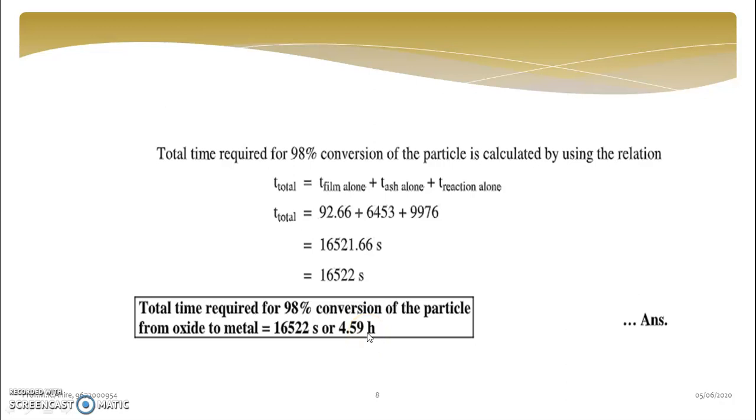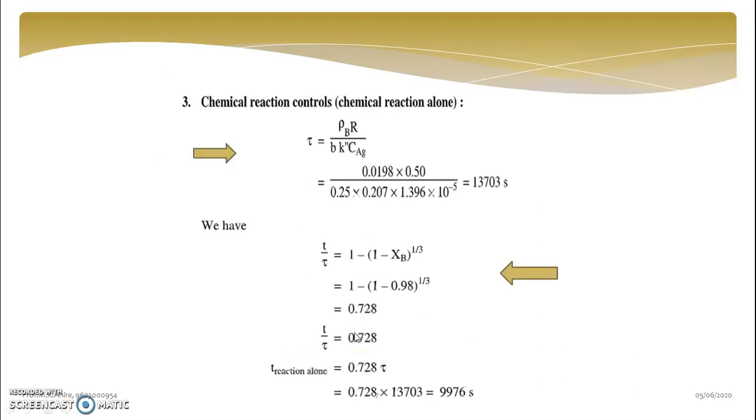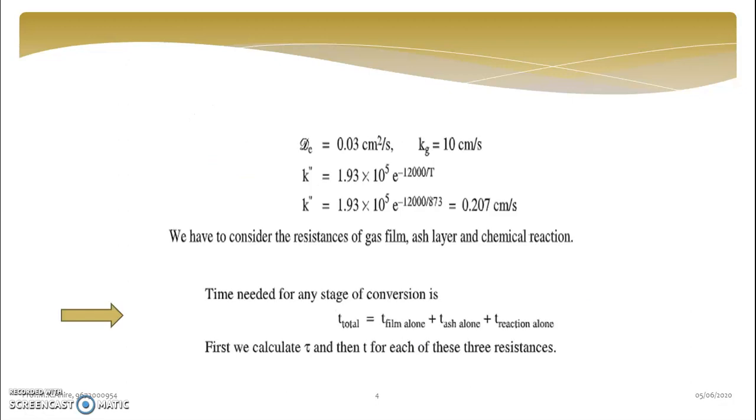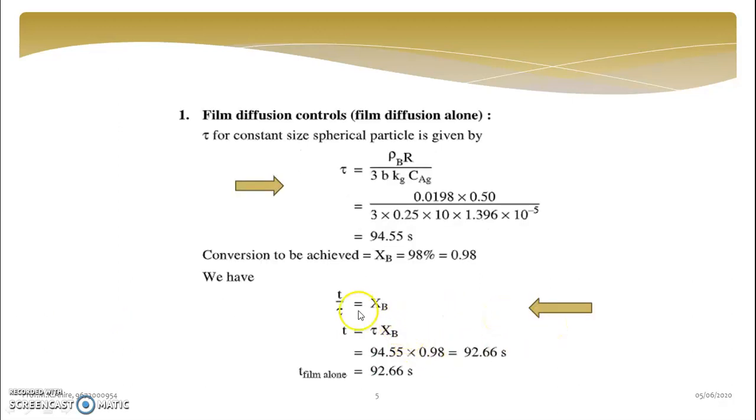Because 3600 second is nothing but 1 hour. So finally we have got the time required for 98% conversion of the particle as 16522 second or 4.59 hour. Friends if they ask to calculate the total time required for conversion, then what you will do? You will write tau is equal to tau of film alone plus tau of ash alone plus tau of reaction alone.